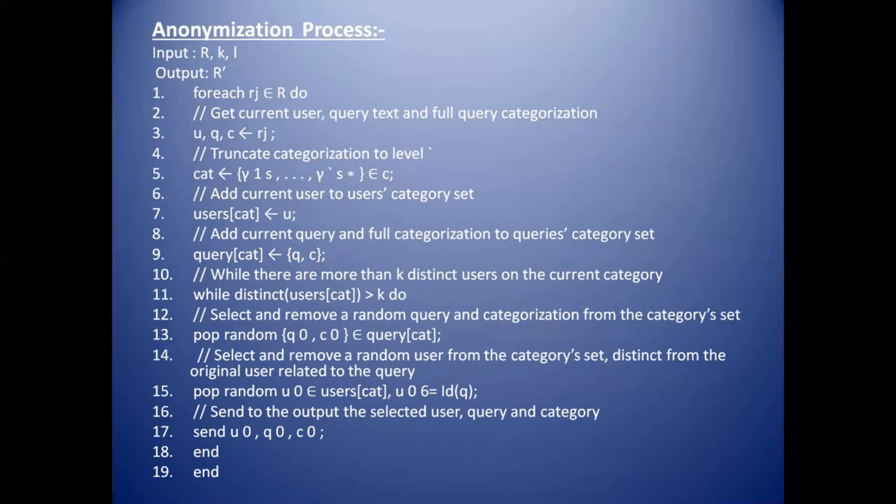Here is the anonymization algorithm. Firstly, get the current user's information and user's query text and full query categorized. That user's information will be categorized in this section and truncate categorized to level. It removes the original data and adds the duplicate data into the user's database.